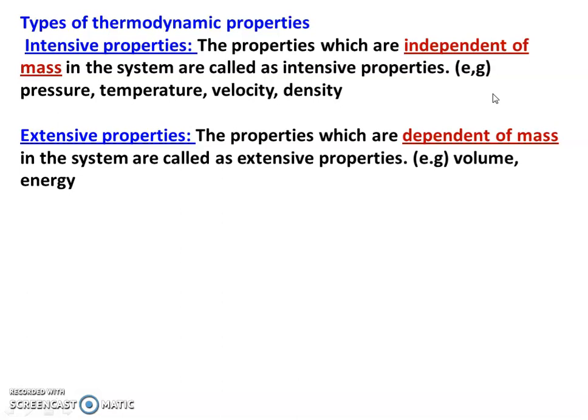Extensive property: the property which is dependent on the mass of the system is called extensive property. Examples: volume, energy. Energy depends on the amount of food you ate — the quantity of food you take determines your energy level. So energy depends on mass.